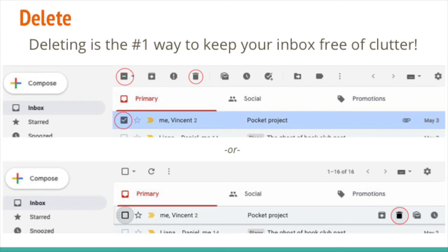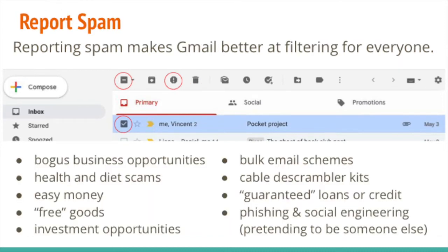Reporting spam is one way to make Gmail better at filtering out unwanted messages. So rather than just delete something, if it's really malicious — unsolicited messages trying to get you to buy something, things that look like scams — the great thing to do is to actually mark those as spam so that Gmail not only knows not to deliver them to you, but not to deliver them to any of their users in the future. You check off the message in your inbox, but instead of clicking the trash can icon, you click the little exclamation point right next to it. That will mark the message as spam, which moves it out of your inbox and alerts Gmail to filter out messages like that in the future.